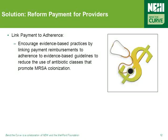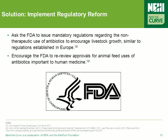Given the issues providers face regarding the prescription of antibiotics, it's clear that the payment system must be reformed to encourage these providers to do more to address this issue. One way is to encourage practices that link payment reimbursements to adherence to evidence-based guidelines that reduce the use of antibiotic classes that promote MRSA colonization. One final promising way to reduce antibiotic overuse is regulatory reform by the FDA regarding the regulations concerning antibiotic use in livestock.